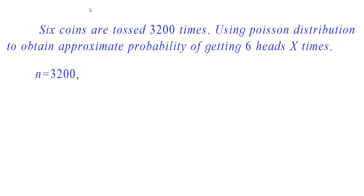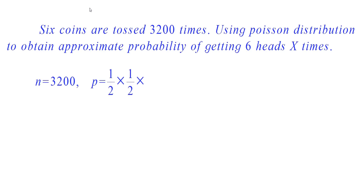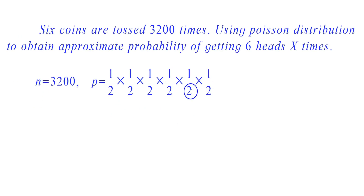Here the number of coins tossed is 6. Since each coin is an independent event, the parameter P will be 1/2 × 1/2 × 1/2 × 1/2 × 1/2 × 1/2, which is equal to 1 by 64.